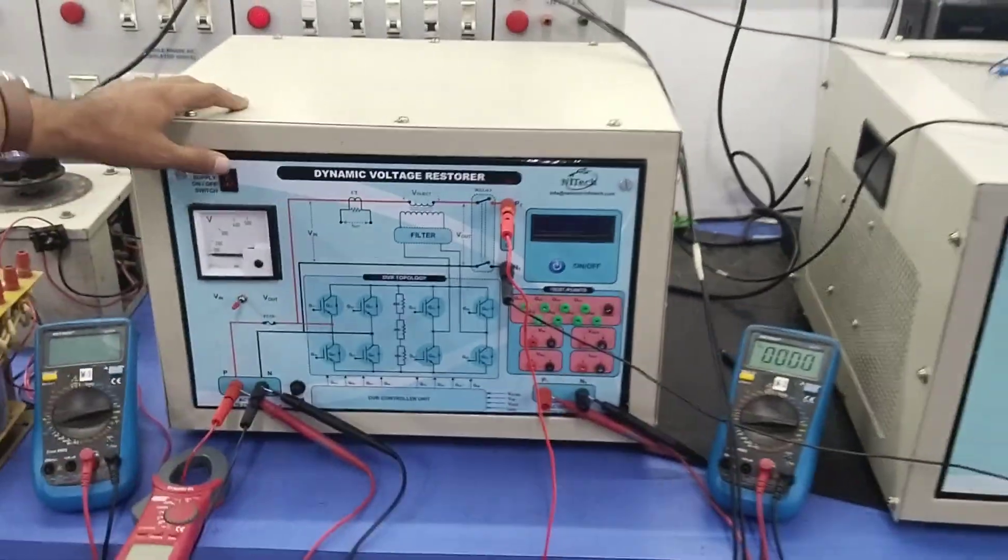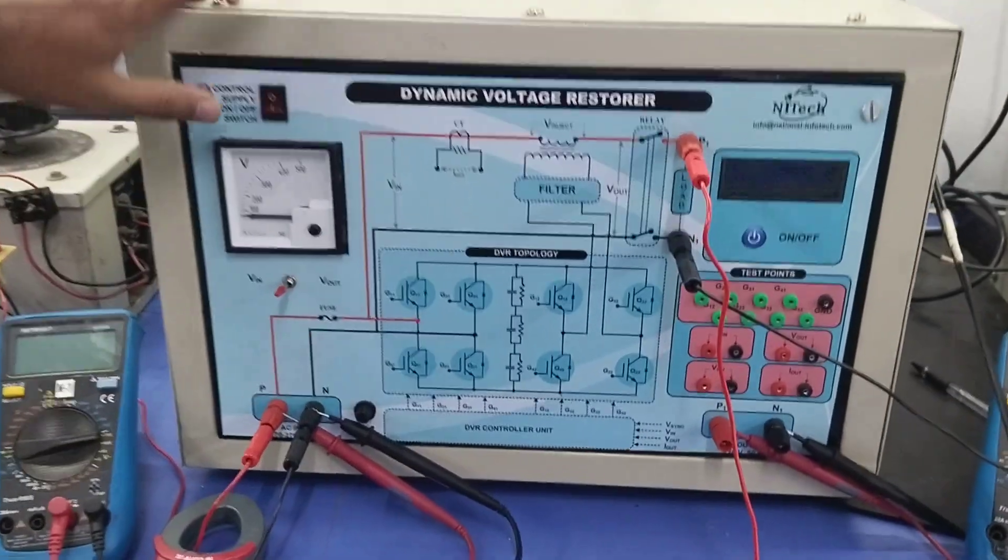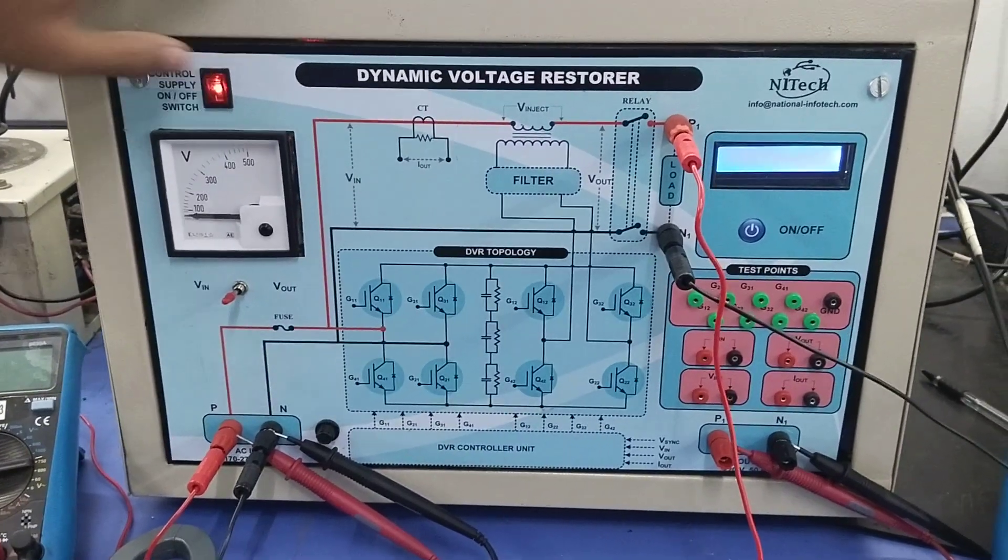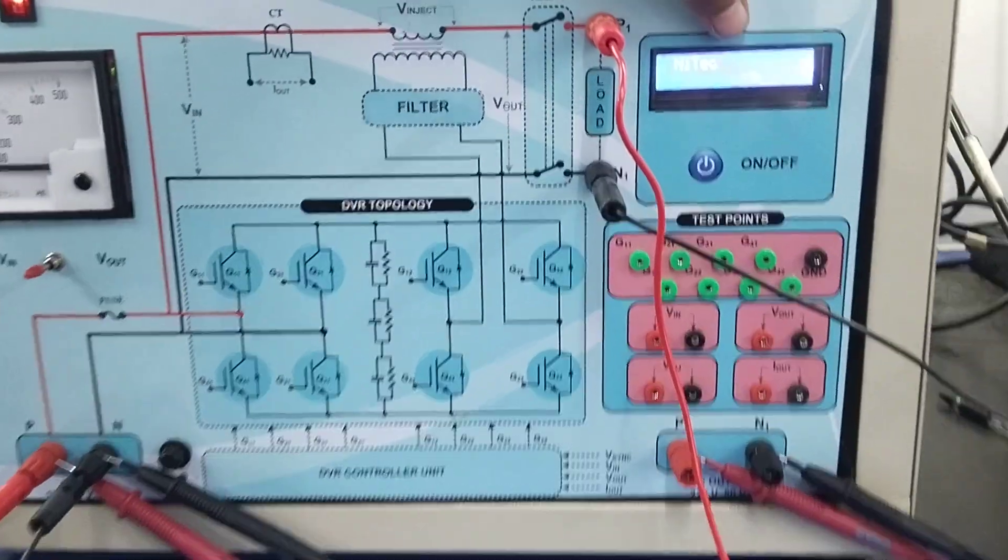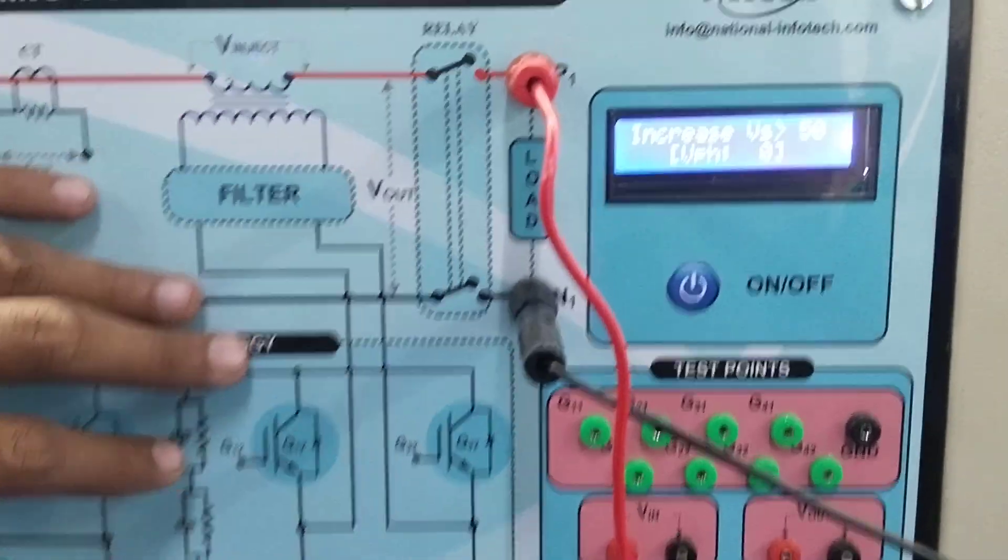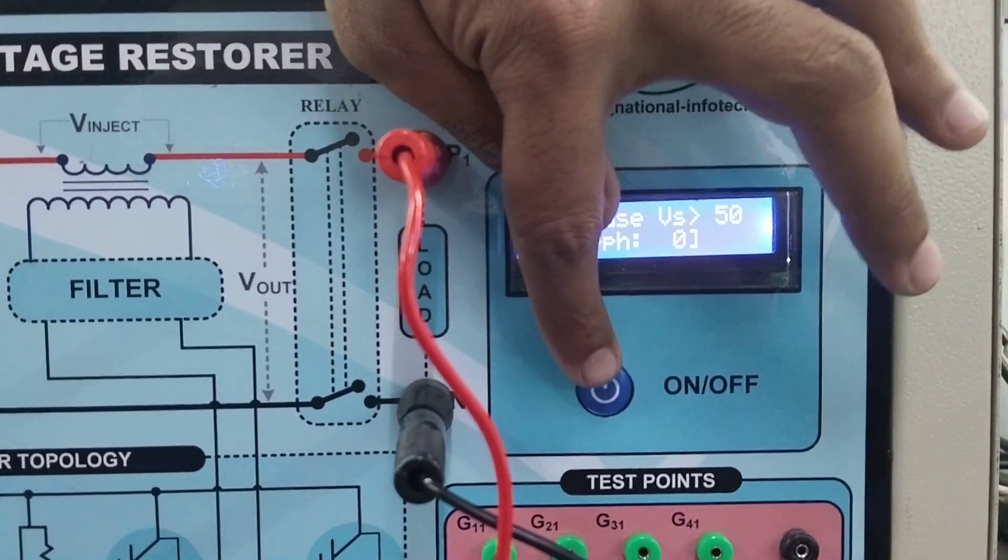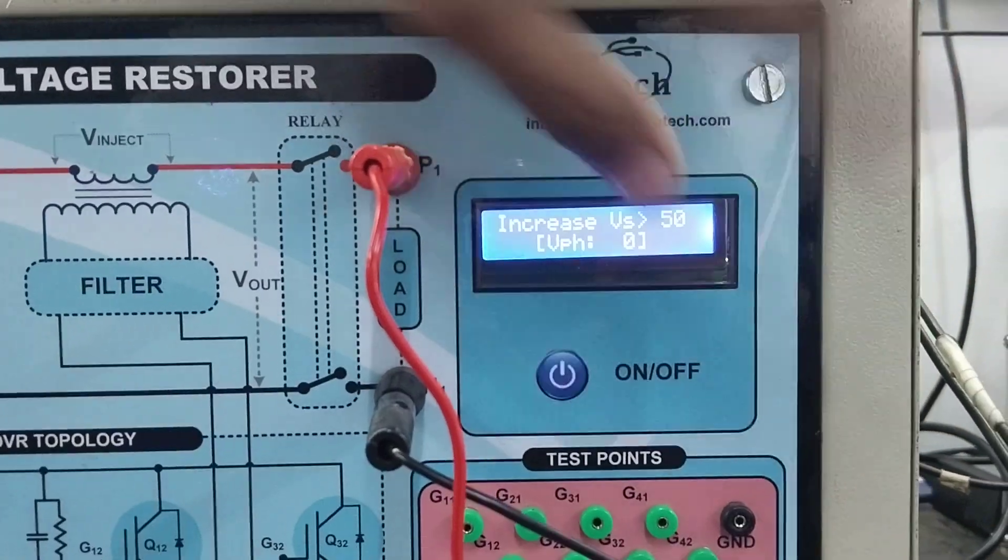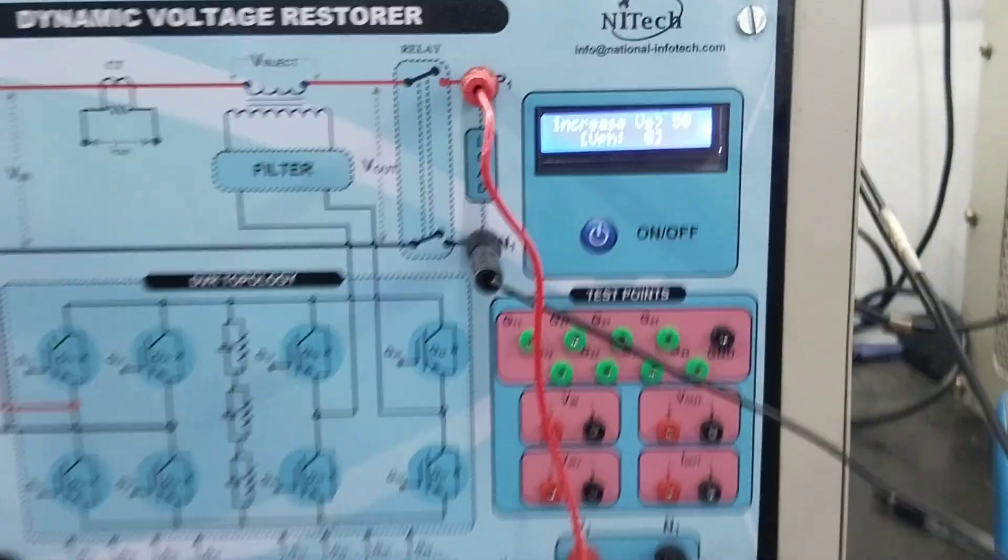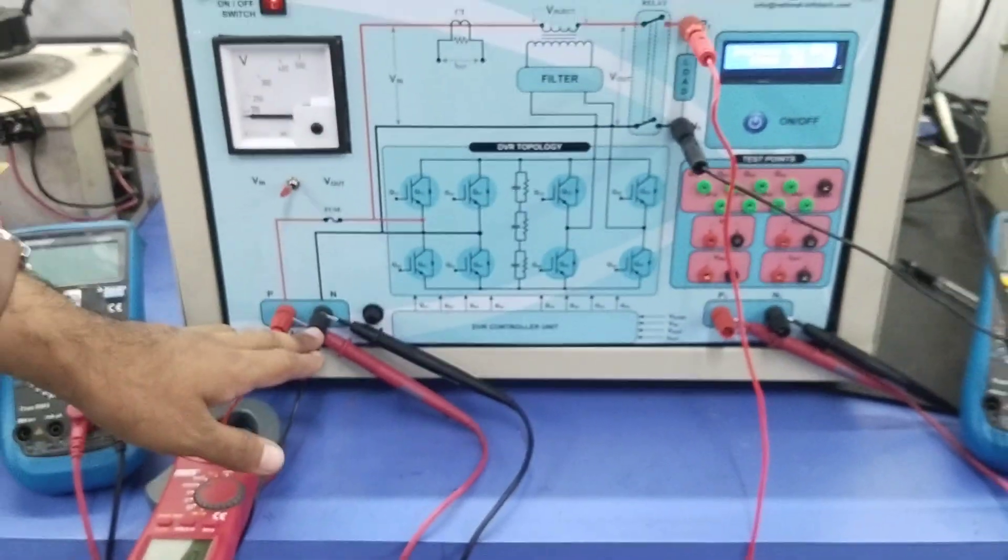So now we come to this kit again. For this kit to run, first one should start this. When you start it, you can see that an algorithm is started and here different parameters you will observe. This key is to turn on and turn off the system.